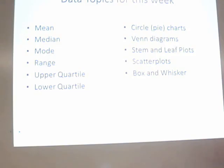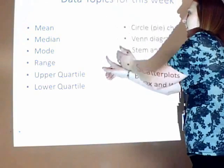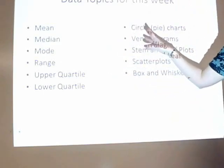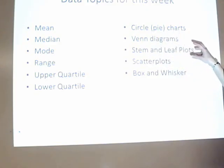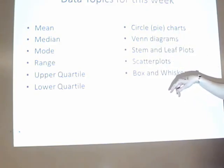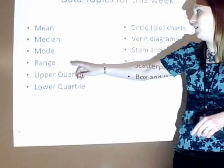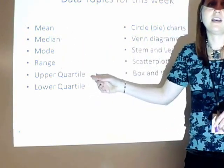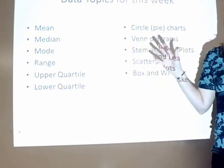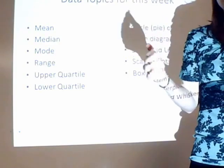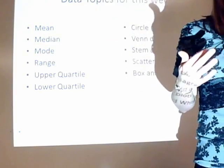Stem and leaf plots. This is where you have a base number, and then you'll have a line, and then you'll have a bunch of things listed. Scatter plots, that's what it looks like somebody snoozed on a graph, and you have a bunch of dots all over the place. And then box and whisker is actually a new one. The good news is you don't have to create any of these graphs. You just have to be able to read them.